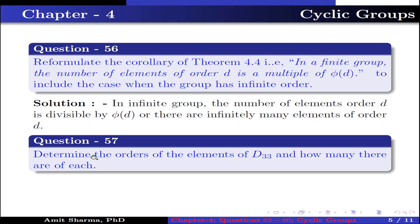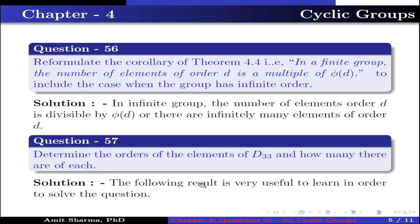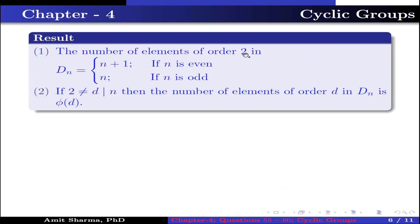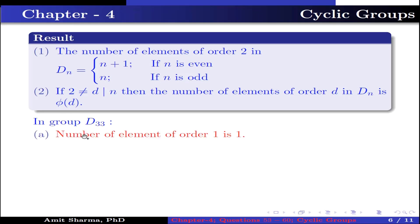Question number 57. Determine the order of the elements of D₃₃ and how many there are of each. The following result is useful: the number of elements of order 2 in Dₙ is n+1 if n is even, and n if n is odd. If d (not equal to 2) divides n, then the number of elements of order d in Dₙ is φ(d). In group D₃₃, the number of elements of order 1 is 1, since each group has only one identity element. The number of elements of order 2 is 33, because n is an odd number.